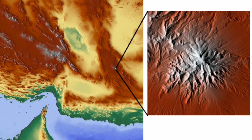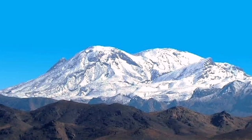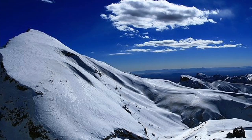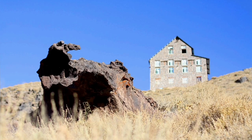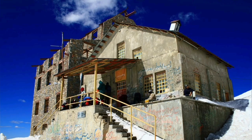This subduction zone has created one of the most famous volcanoes in Iran: Taftan. For those who grew up in Iran, the most famous volcanoes are Damavand, Sabalan, and Taftan. The name Taftan means molten rock — something that is melted by fire.